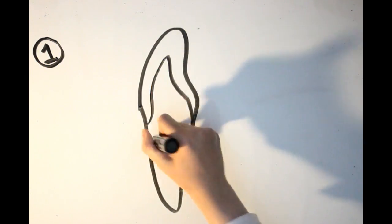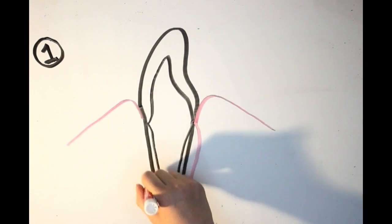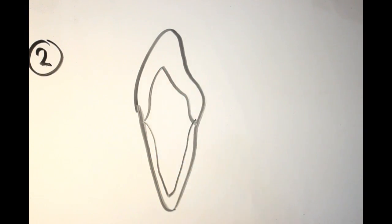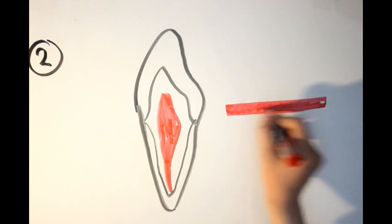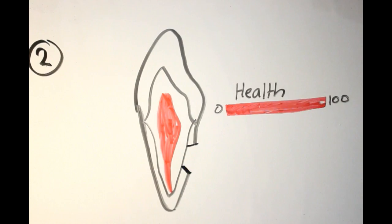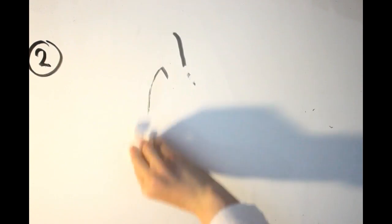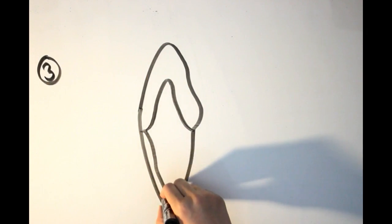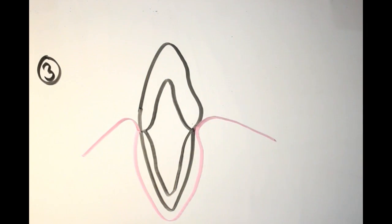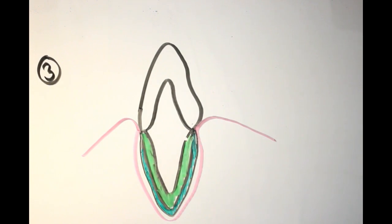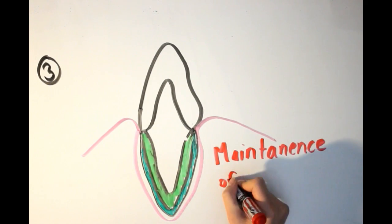Cementum has many functions that include providing an attachment site where the collagen fibers of the periodontal ligaments, protecting the underlying tissues as the loss of cementum exposes dentin to the oral cavity, and lastly by apposition of new cementum it maintains the length and width of the periodontal spaces as well as repair minor fractures in the root.